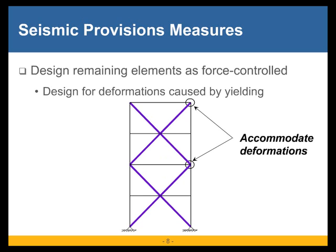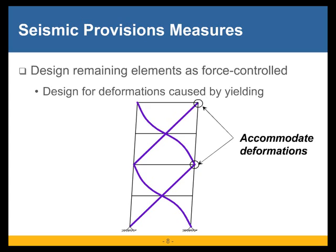The other thing you need to do for the force controlled elements is to ensure that the deformations caused by the yielding of the deformation controlled elements can be accommodated. For example, if you're expecting the compression braces to buckle, the connection details either need to be strong enough to allow the buckling to occur in the brace and not the connection, or have the correct flexibility and restraints to allow that brace to buckle freely.